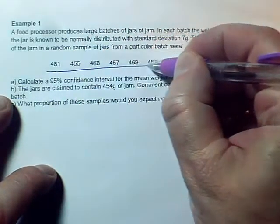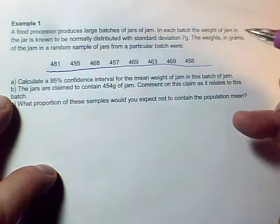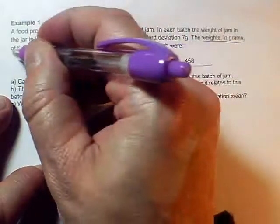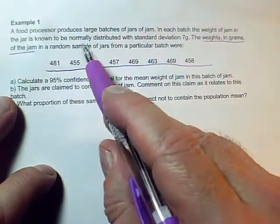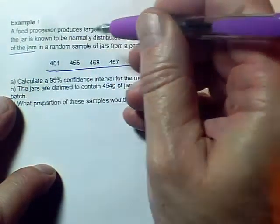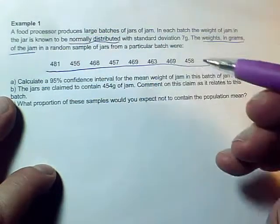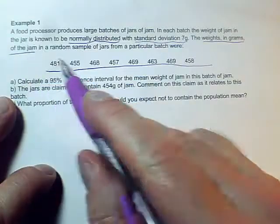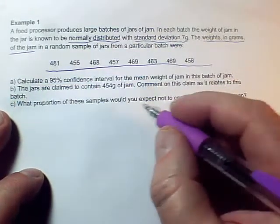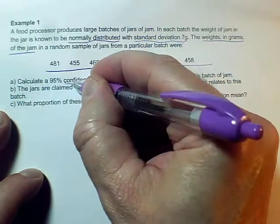In this question I've got a sample of weights of jars of jam, and we've got a sample. We know that the distribution is normal, that's important, and we know the standard deviation of the population. So what we've got to do is set up a confidence interval.